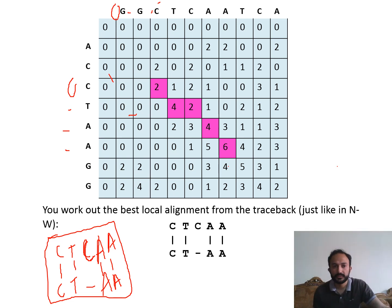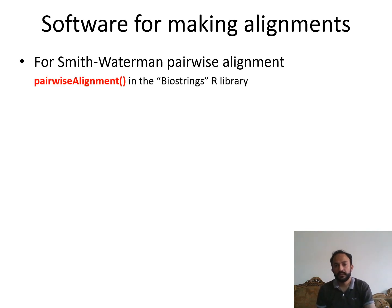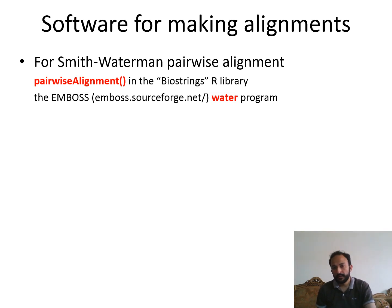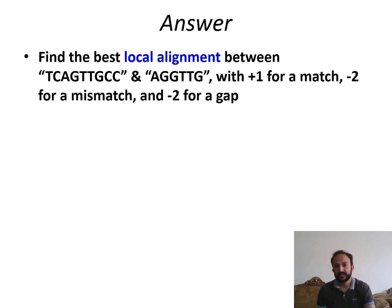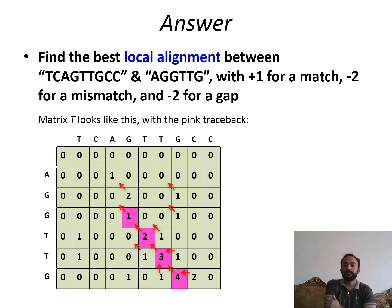For bioinformaticians, the Biostrings R library can be used for Smith-Waterman pairwise alignment. R is also very easy for non-bioinformaticians — you just have to use packages for alignment. As a final example: find the best local alignment between sequences TCAGTTGCC and AGGTGG, with plus one for match, minus two for mismatch, and minus two for gap.